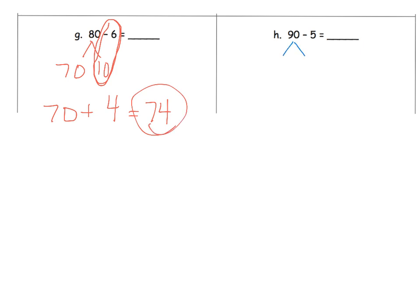And one last example here. We're going to decompose 90 so that we have a 10. So that means we're going to have 80 and 10. So 10 minus 5 is 5. So now we have 80 plus 5 gives us 85.